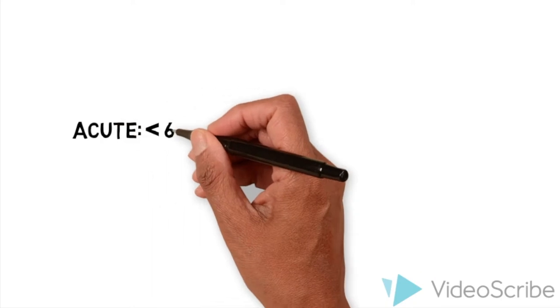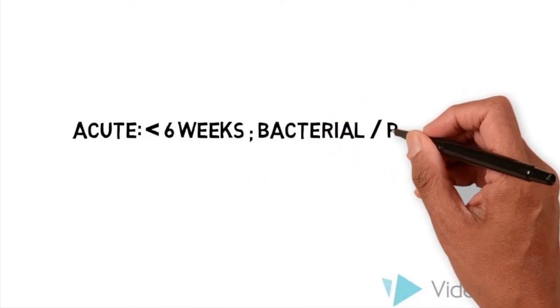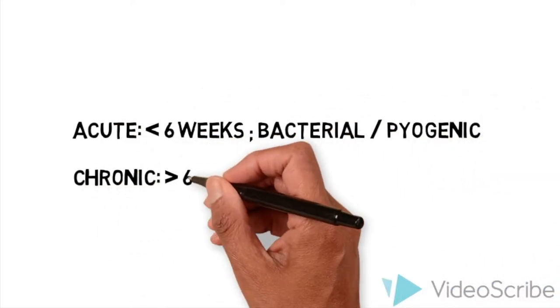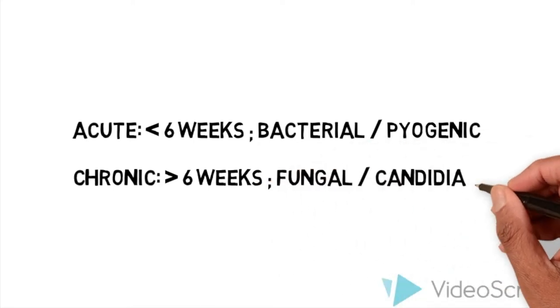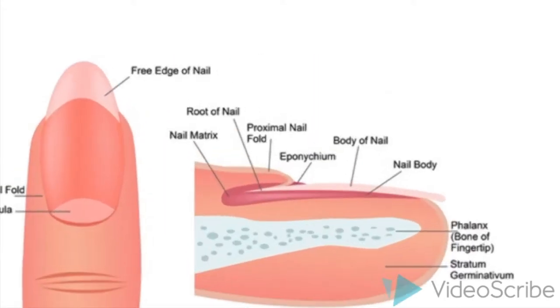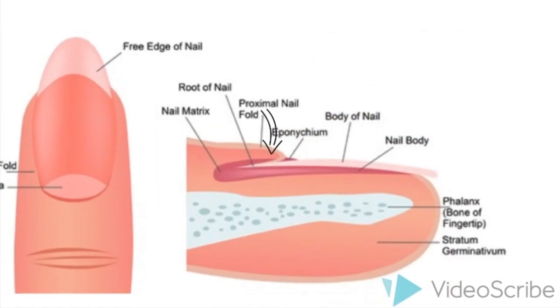It can either be acute, lasting less than six weeks, where it is usually bacterial, or it can be chronic, lasting more than six weeks, where it is usually fungal. It presents clinically with redness of the skin, warmth of the infected nail, and there may be pus discharging from the nail fold. The infection usually starts under the nail fold, and if left will progress to subungual, or to the base of the nail, the eponychium.